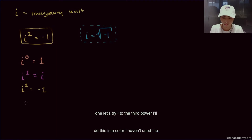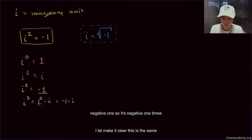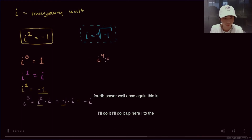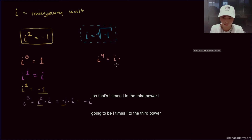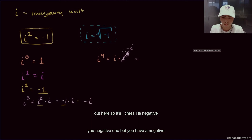Let's try i to the third power. That's going to be i to the second power times i. We know i squared is negative 1, so it's negative 1 times i, which we write as negative i. Now i to the fourth power — that's i times i to the third power. i to the third power was negative i, so we have i times negative i. i times i gives negative 1, and with the negative out front, that's negative 1 times negative 1, which gives positive 1.